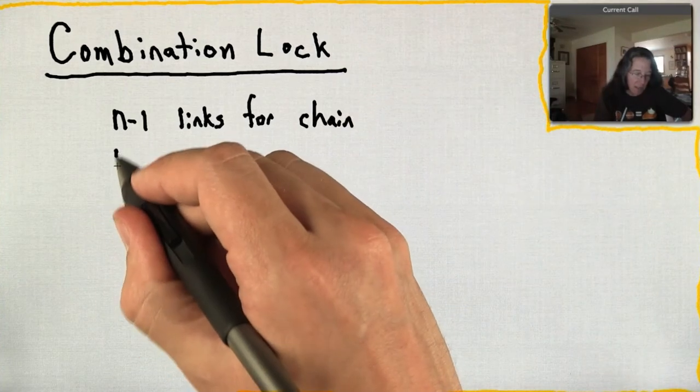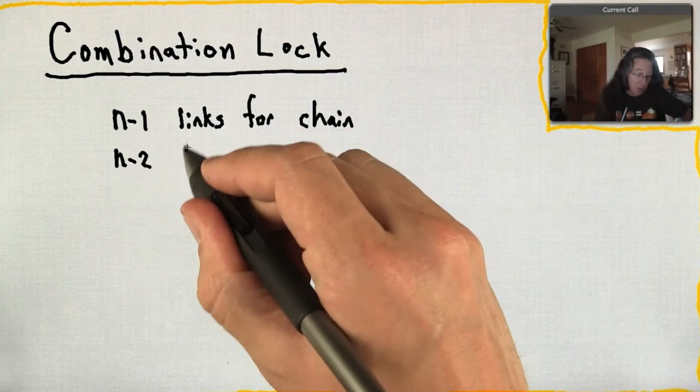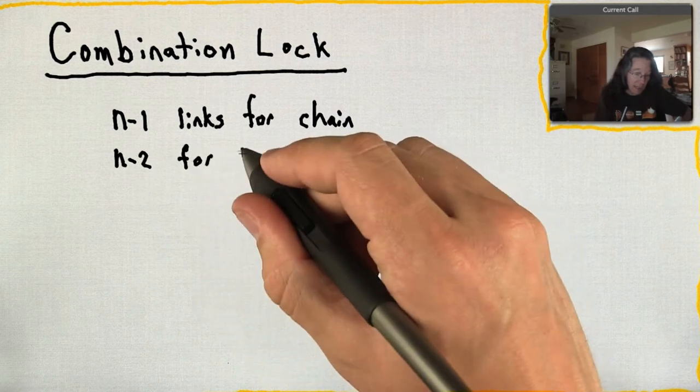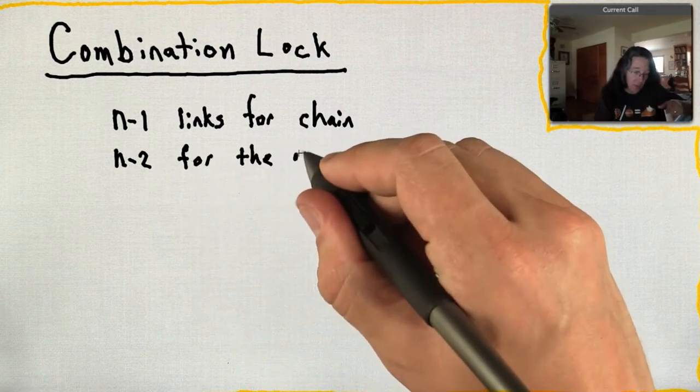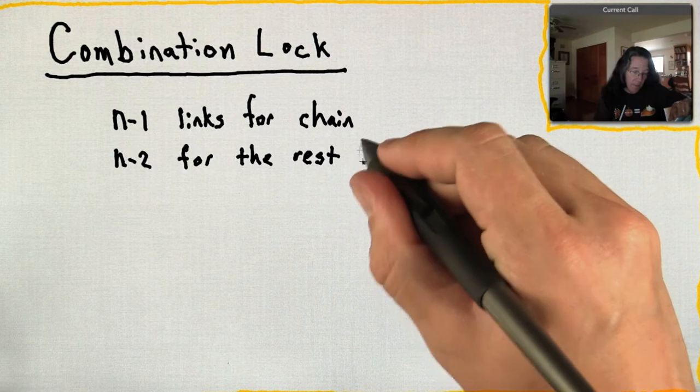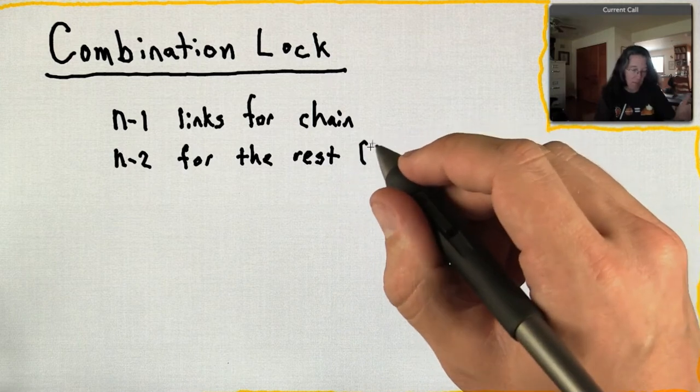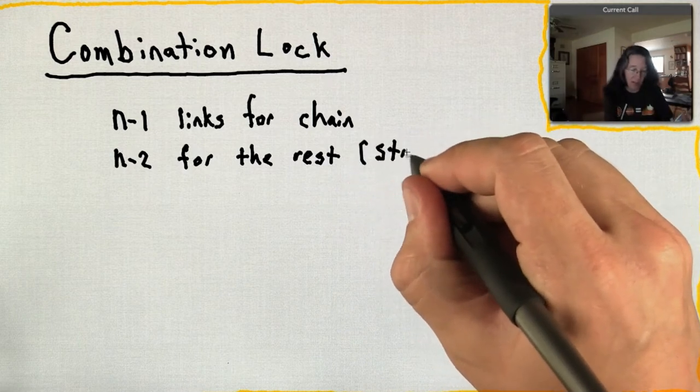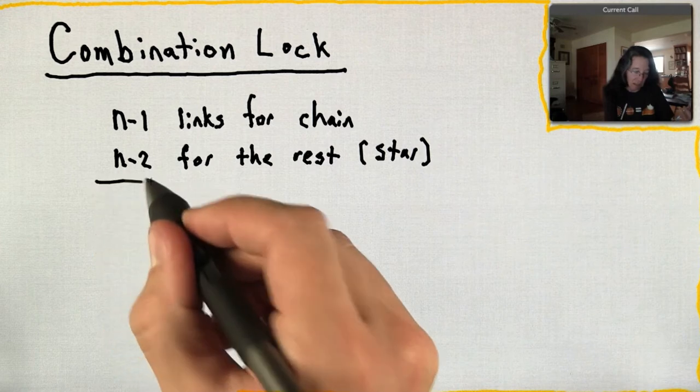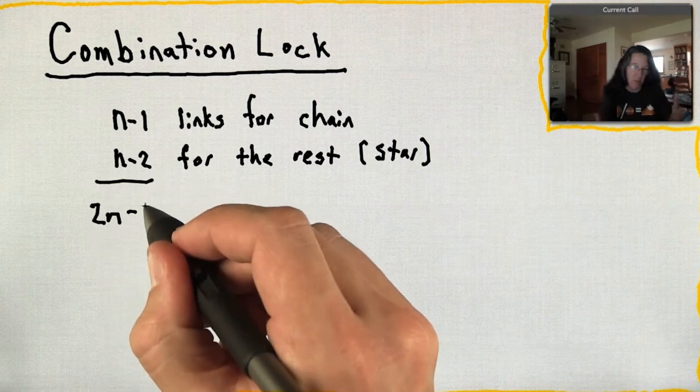Basically, I calculated the chain first, and then I calculated all the other ones where I couldn't count between the zeroth and the first element because I'd already done that, and so just one less.